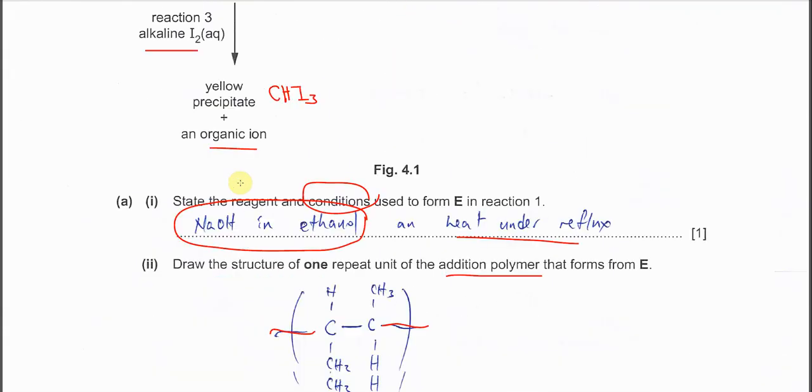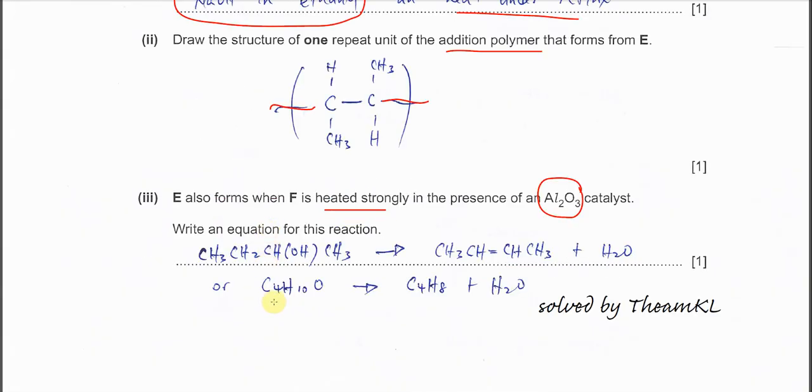So give an equation. You can give this or you can give the molecular formula. So this OH will remove with this H. This H and form this alkene CH3 CH double bond CH CH3 and of course plus H2O. It must be H2O. Many candidates forgot this one. They just put the alkene. Or you can just use the molecular formula, it's fine.